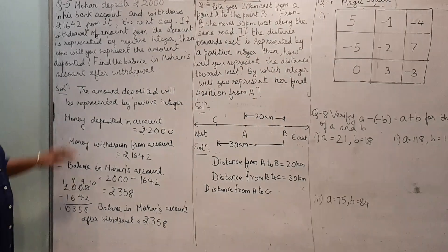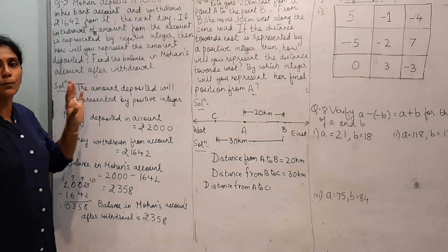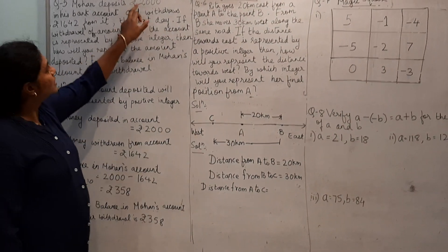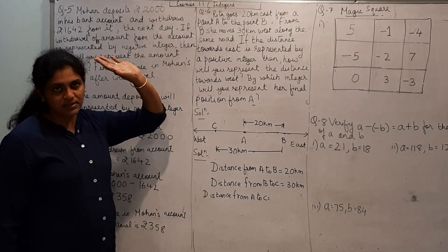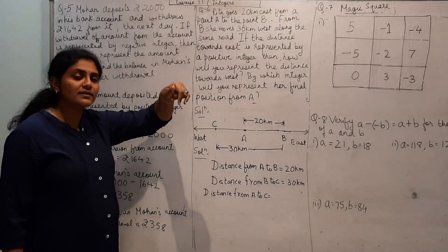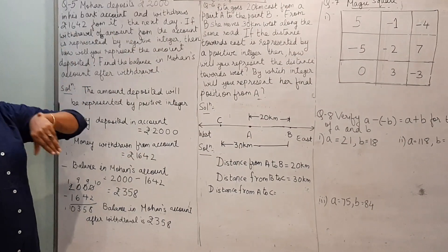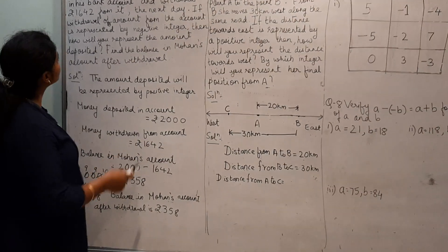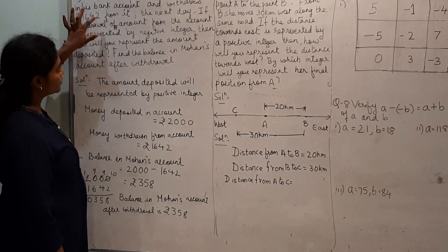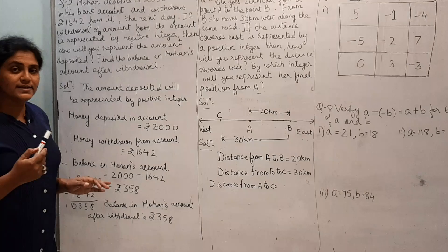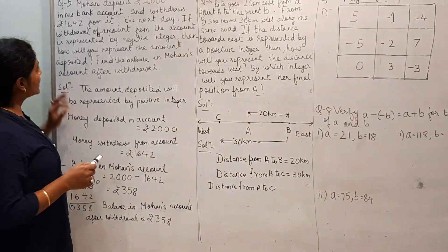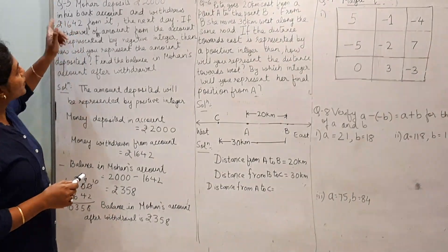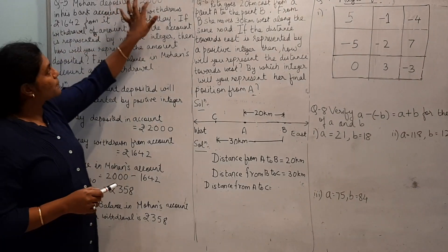Mohan has deposited Rs. 2000 in his bank account. The next day he has withdrawn Rs. 1642. Now this withdrawal amount is represented by a negative integer, so the deposited amount should be positive.